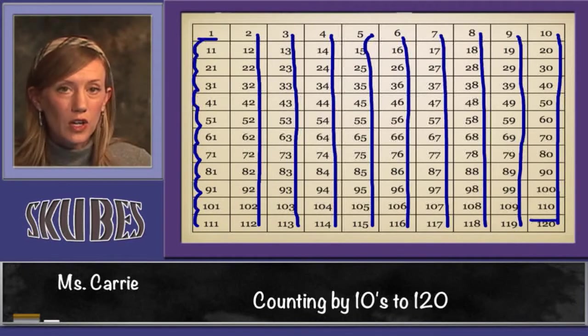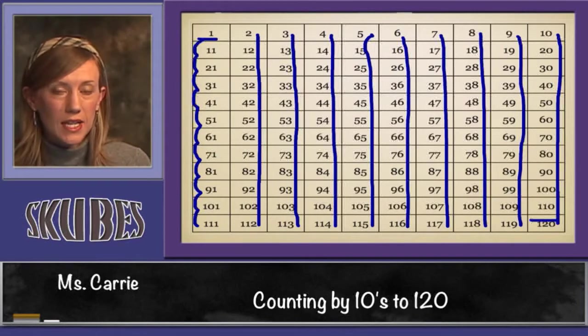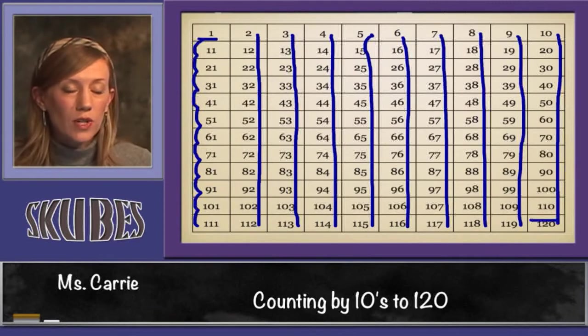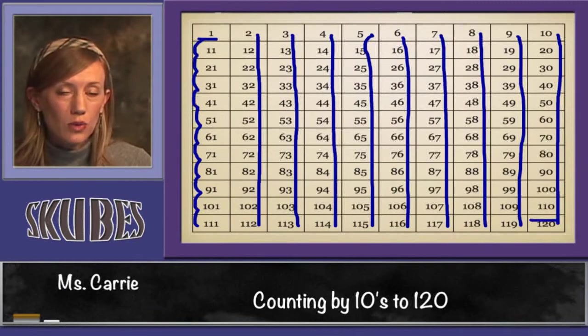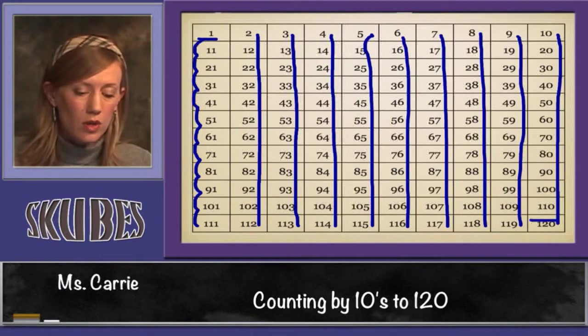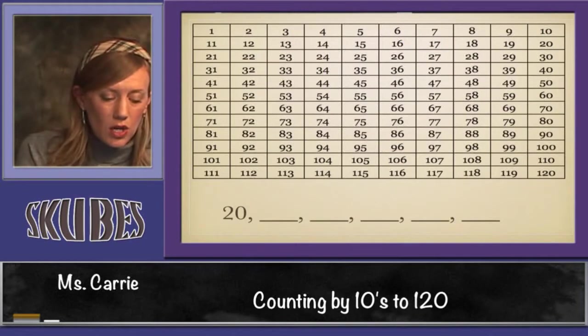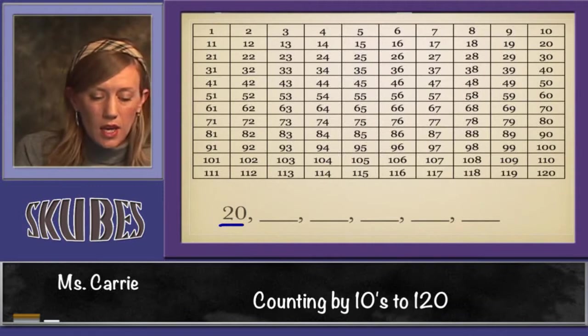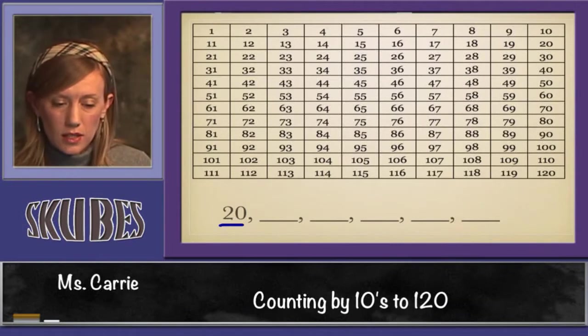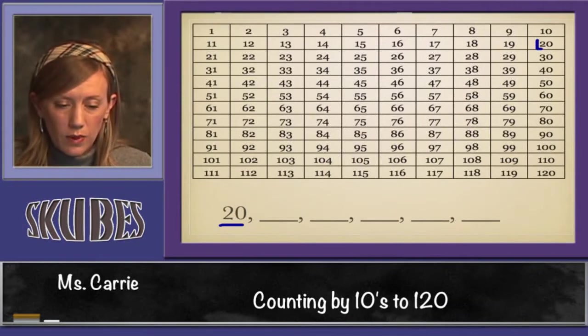This is going to be very important to us when we count by tens, because every time you count by 10, you go down to the next row. Let's take a look at how this works. Say we wanted to start at the number 20 and we wanted to count by tens. Well, we find our number 20 right here.